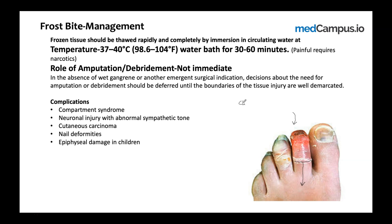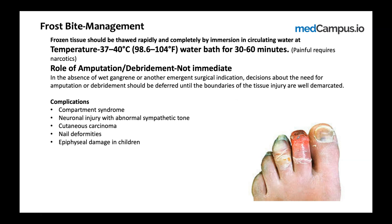The clinical demarcation line may take time to develop. If you want to treat the patient early — before clinical demarcation — MR angiography can be used to visualize the demarcation line early and give a clear picture. The take-home: amputation or debridement has a role, but not immediate, because you must wait for a well-demarcated line separating normal tissue from gangrenous tissue.